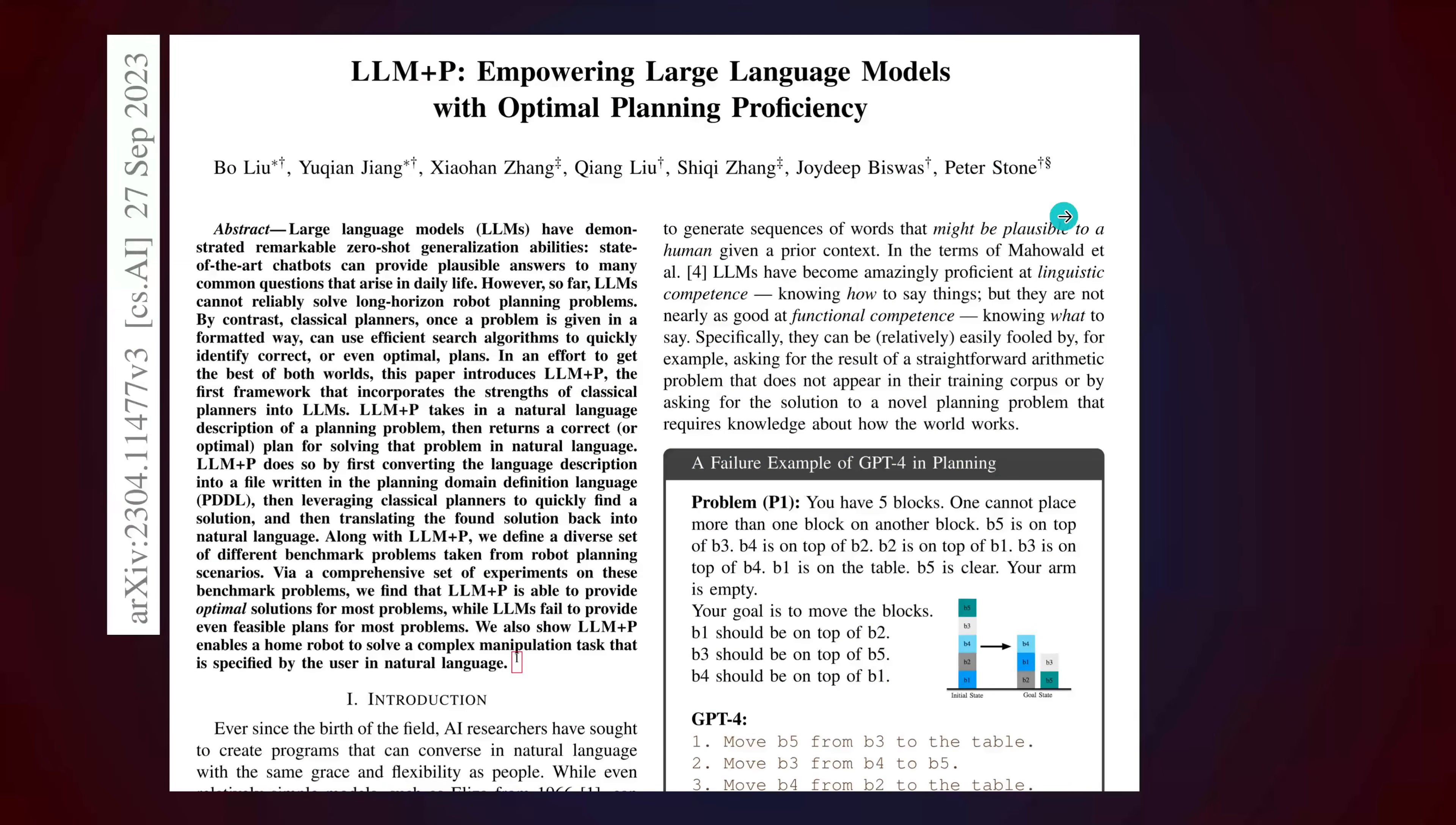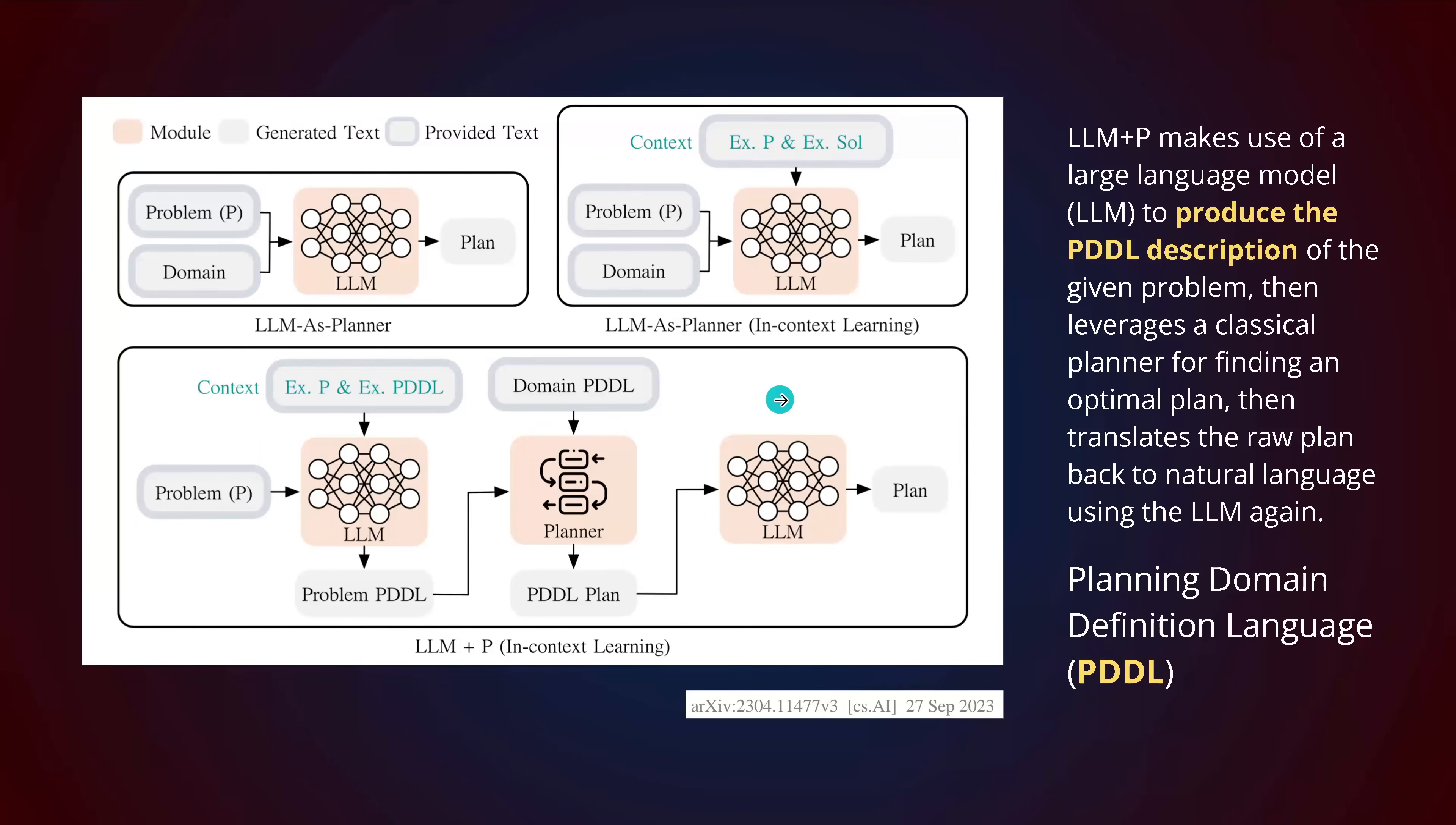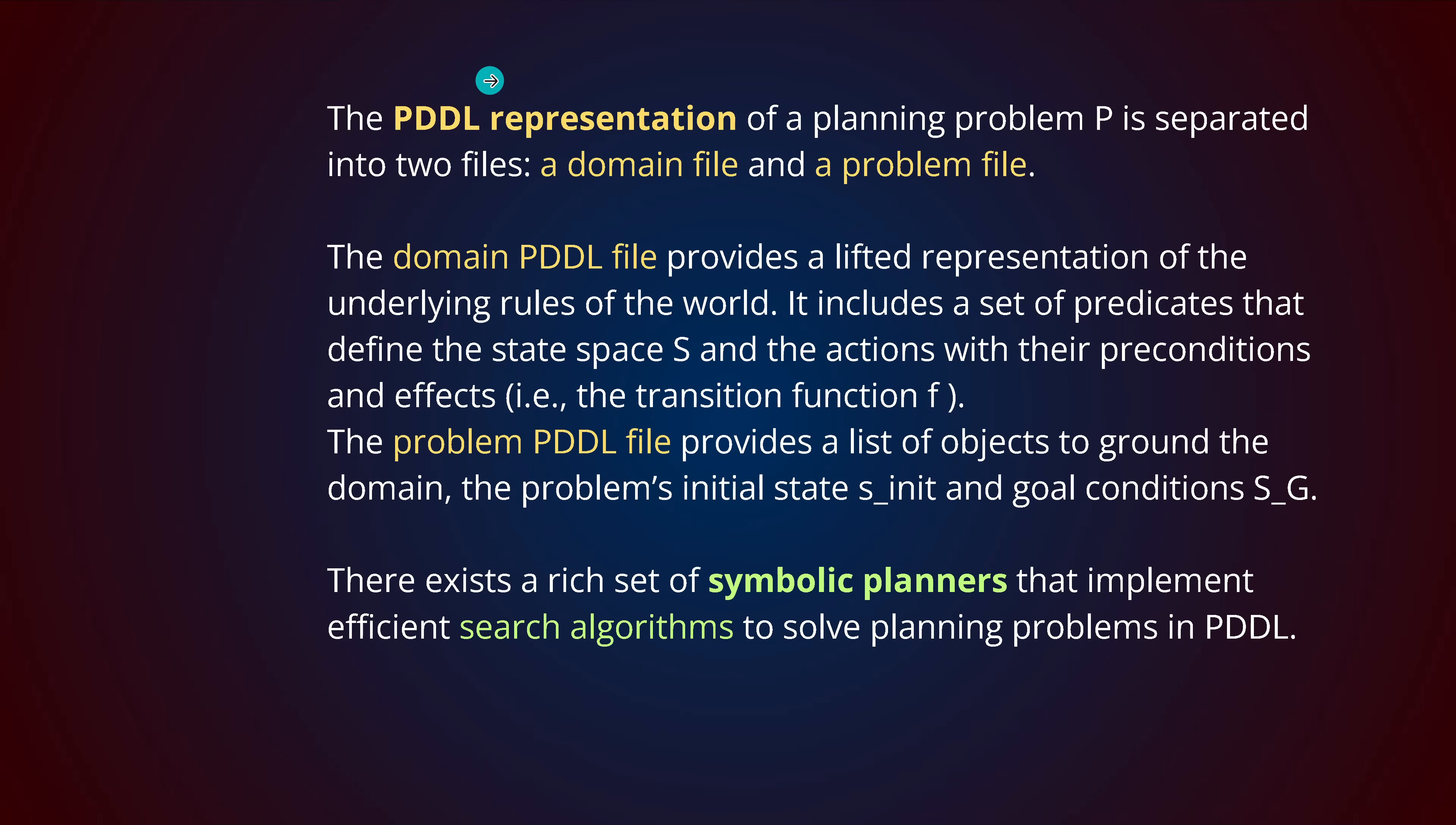You remember we have this problem from a long time ago. We have some blocks and you have to find a new configuration of the blocks. In 2023 we were already talking about LLMs and optimal planning proficiency. We have an LLM to produce the PDDL description for a problem, and a classical planner finding the optimal plan, but it was not really working. The idea of the planning domain definition language was great and you remember we had two files: the main domain file and a problem file.